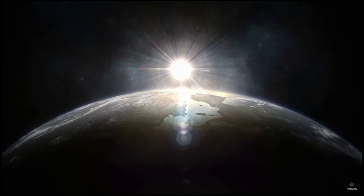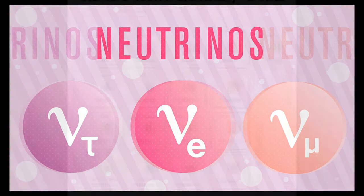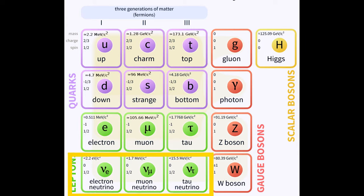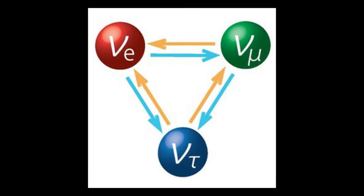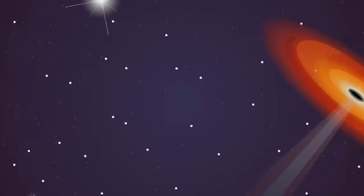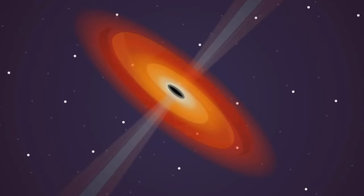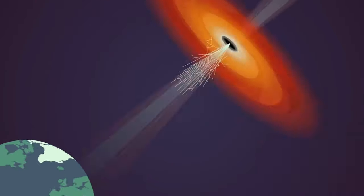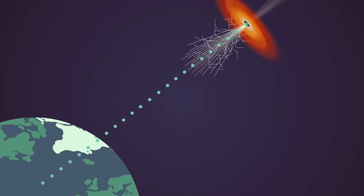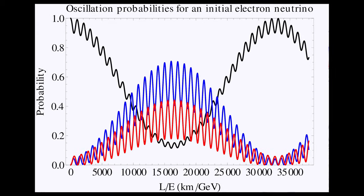Neutrinos come in three types or flavors: electron, muon, and tau. The different types of neutrinos differ in terms of their mass, the electron neutrino having the least mass and the tau neutrino having the most. They also differ in terms of how they interact with matter. Electron neutrinos interact weakly with matter, while muon and tau neutrinos interact more strongly. Finally, each type of neutrino oscillates between the other two types as they travel through space, so that an electron neutrino may eventually become a muon or a tau neutrino.